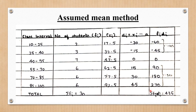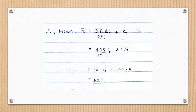Finally, we find the sum of fi·di. The mean formula here is: x-bar equals the sum of fi·di divided by the sum of frequency, plus a. The sum of frequency is 30, and a is the mid value 47.5. Adding these values, we get the mean as 62.